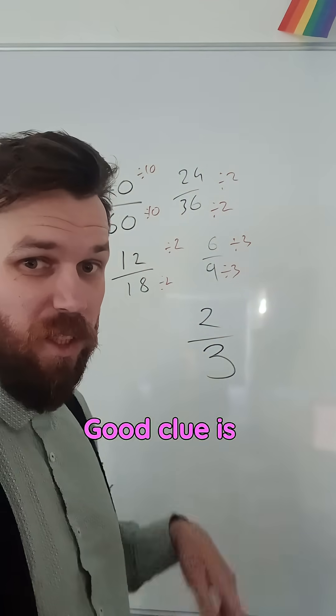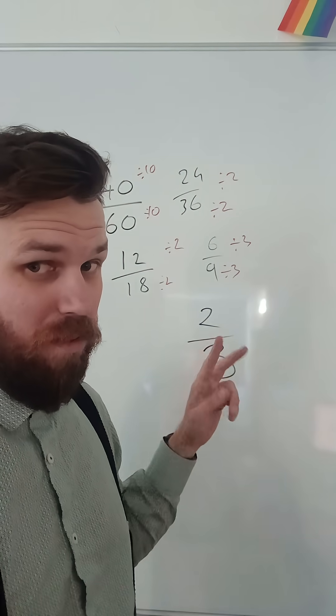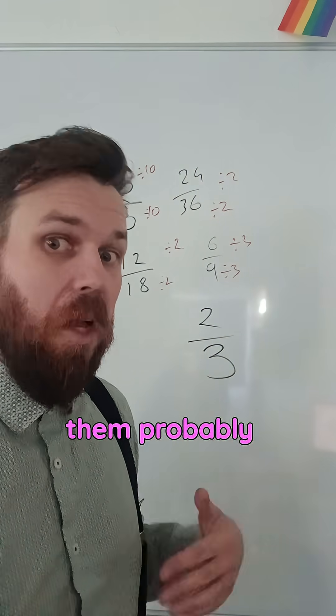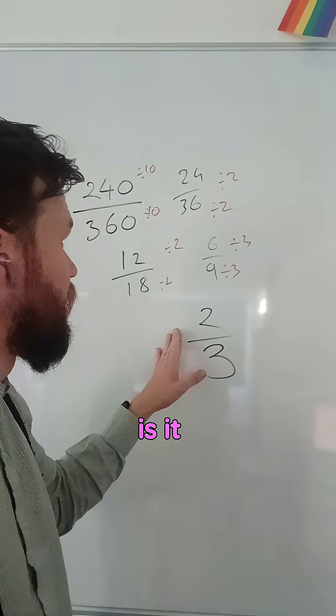I can't divide 2 and 3 by anything else. A good clue is that one or both of them are prime. Both simplified as much as it can be. One of them, probably close. So that is it, simplified.